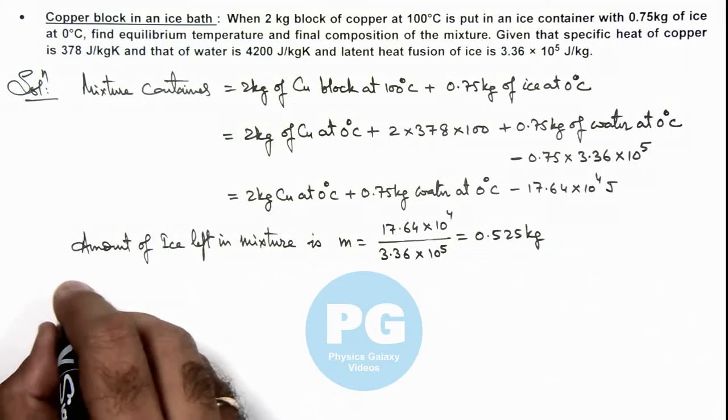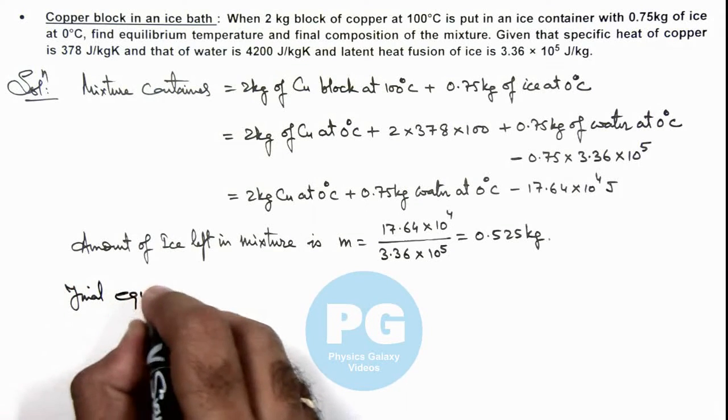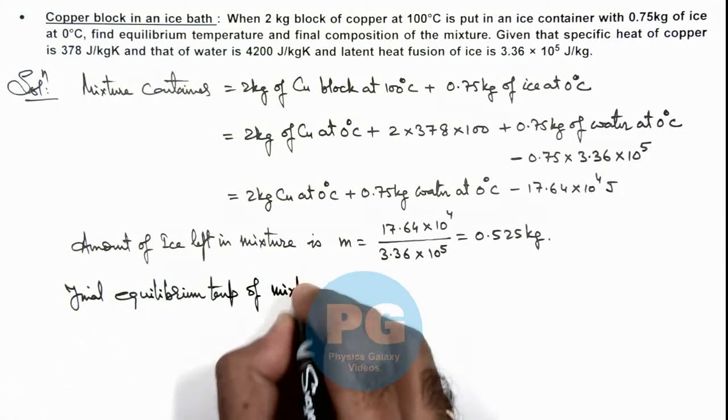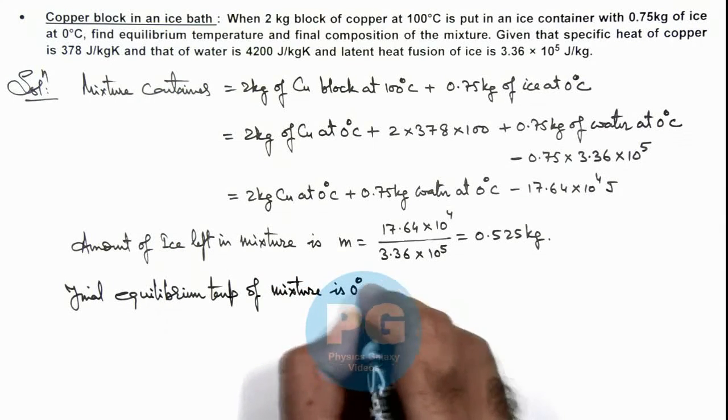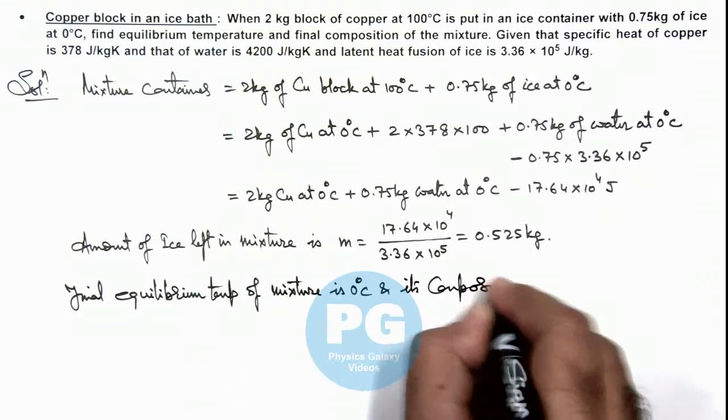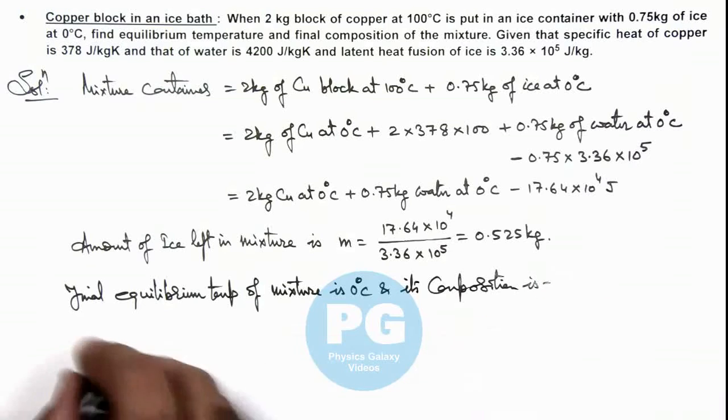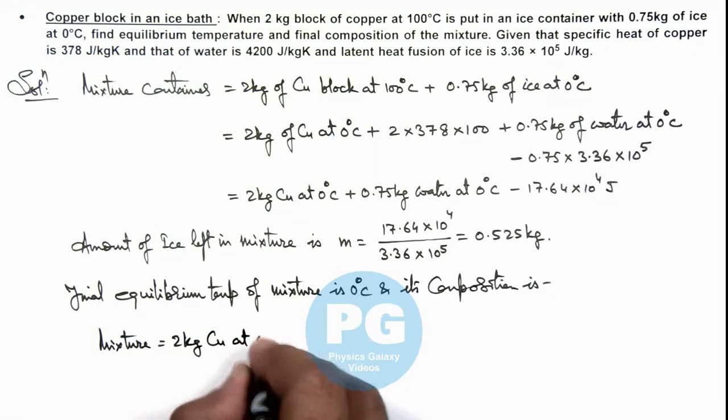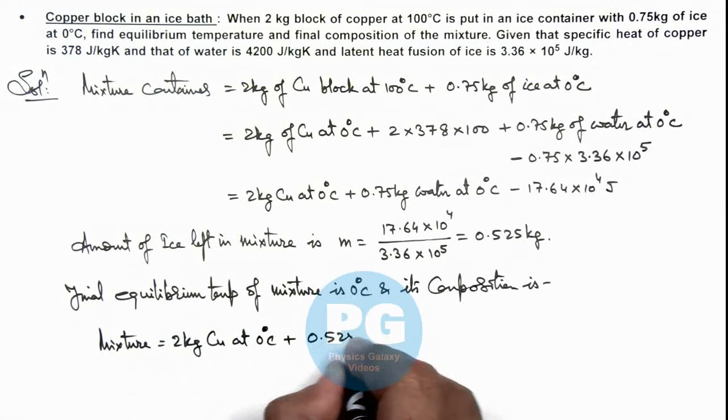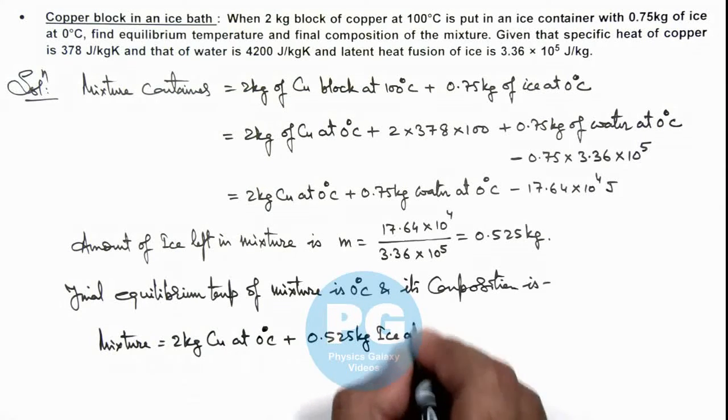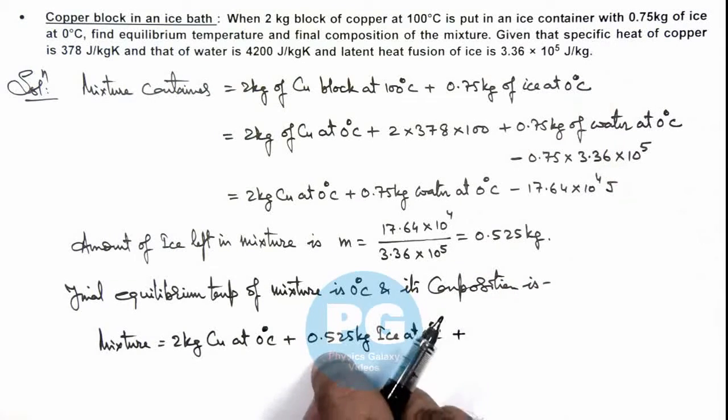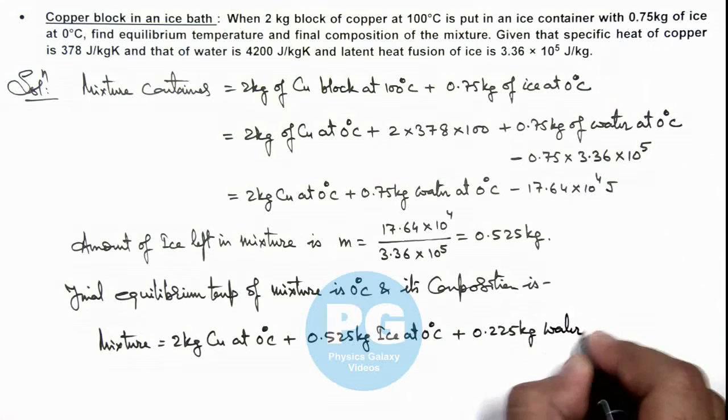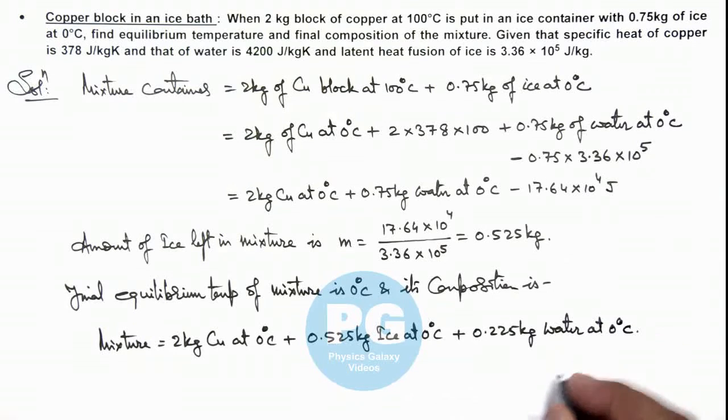So now we can write final equilibrium temperature of mixture is 0°C and its composition is: we have 2 kg of copper block at 0°C plus 0.525 kg of ice at 0°C plus 0.75 - 0.525, that is 0.225 kg of water also at 0°C. That is the result of this problem.